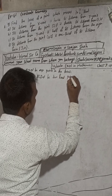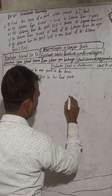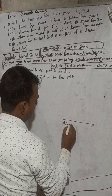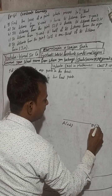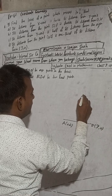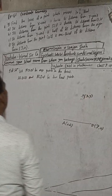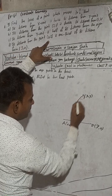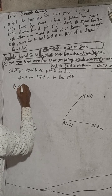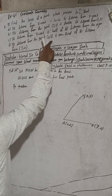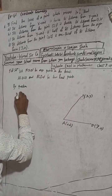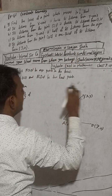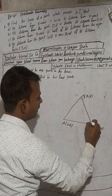We draw the figure: A is (0, 2), B is (3, 0), and P(x, y) can be any point in the locus. By the question, the distance PA is equal to one third of the distance from (3, 0), that is PB. So PA = (1/3) PB.